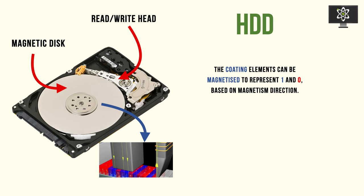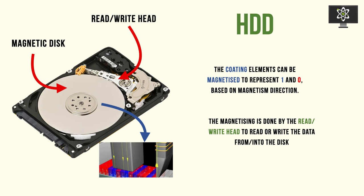The coating element on the magnetic disc can be magnetized - the elements within the disc can flip in direction. As shown in the diagram, there are red and blue elements facing in opposite directions, representing different magnetic directions, and those represent ones and zeros. The magnetizing is done by a device within the HDD known as the read-write head, similar to those old music-playing device needles, and that head is responsible for reading and writing onto the disc.